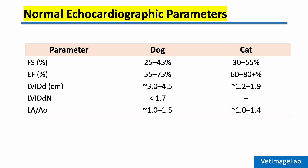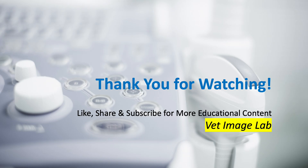Here's a quick summary of the normal echocardiographic parameters we've reviewed. On the left you see the typical values for dogs, and on the right the corresponding reference ranges for cats. You can use this table as a reference in your practice — you'll also find these values posted in the comments below so you can copy and keep them as a quick reference. Of course, always interpret them in context, along with chamber shape, wall thickness, Doppler findings, and clinical signs.